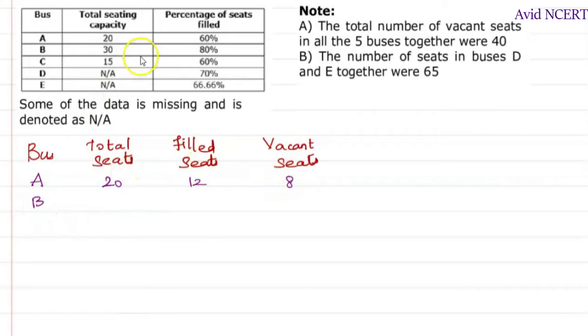Now for bus B, total seats available is 30. Out of this 30, 80% is filled which is 8 times 3 is 24, and 30 minus 24 is 6.